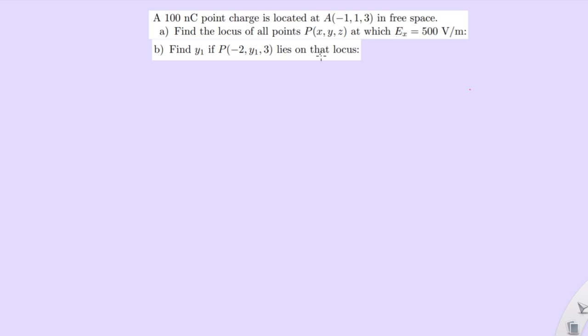Okay. A charge of 100 nanoCoulombs is located at a certain point in free space. Notice that free space is going to mean that epsilon is going to be equal to epsilon naught, right? That's just a given. It wants us to find the locus of all points where the x-component of the electric field equals 500.